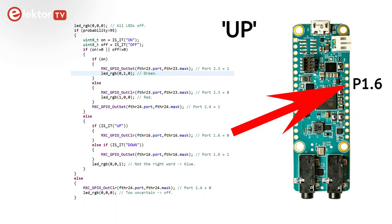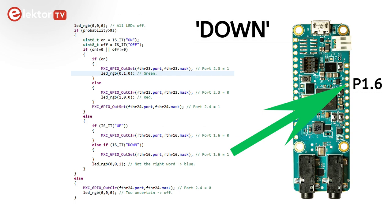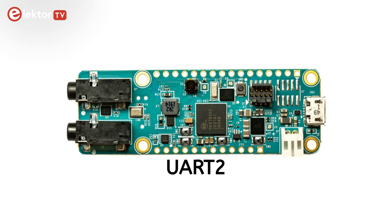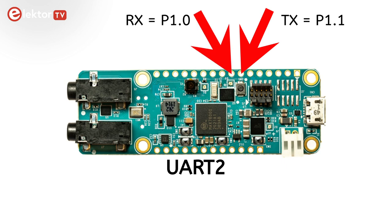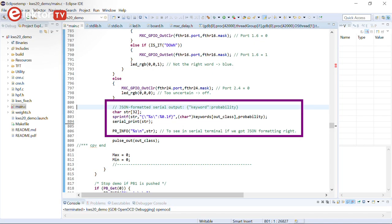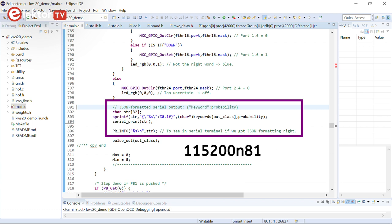If the keyword is 'up', pin P1.6 will go low. When it is 'down', pin P1.6 goes high. I also added UART2 to the mix. This serial port is available on the extension headers — TX is on pin P1.1 and RX on pin P1.0 — and so it can be connected to another system that acts on the data received over this link. The recognized keyword and its confidence value are sent in JSON format. The baud rate is 115200.